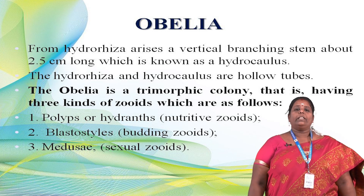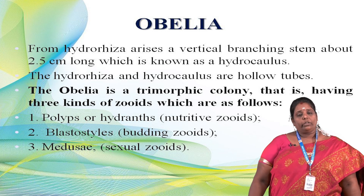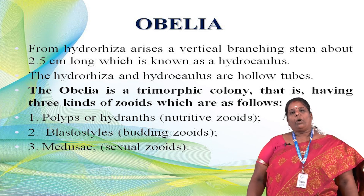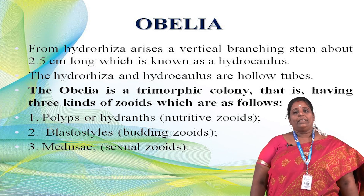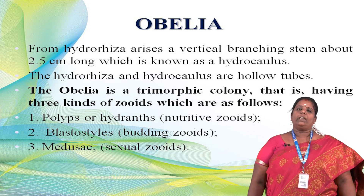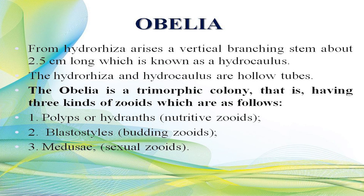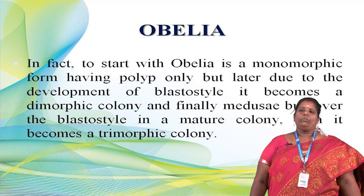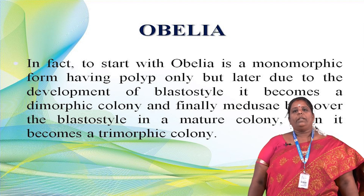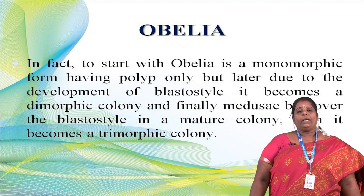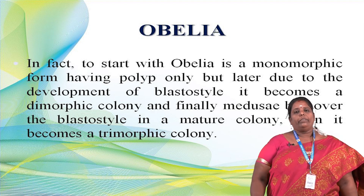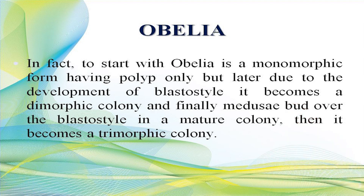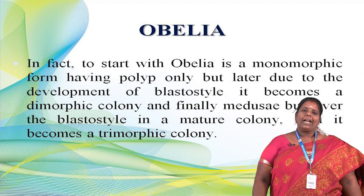The role of polyps and hydranths is nutritive — they are called nutritive zooids because they take in food material through the polyp mouth. The blastostyle is a budding zooid, producing new Obelia colony members asexually. The medusae are sexual zooids, producing sperm and eggs. Obelia starts as a monomorphic colony with only polyps, then becomes dimorphic when blastostyles develop, and finally becomes trimorphic when medusae and blastostyles form a mature colony.